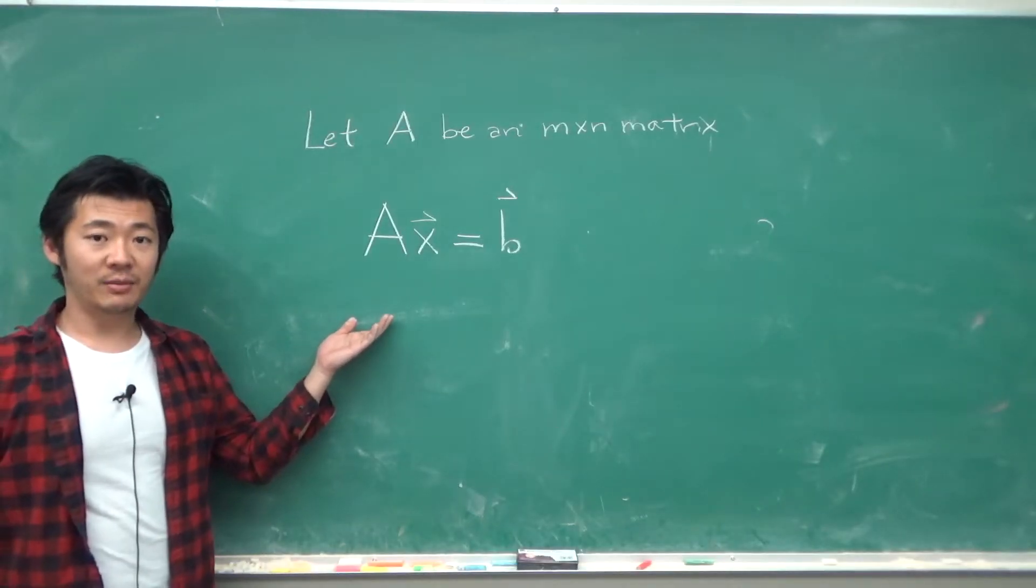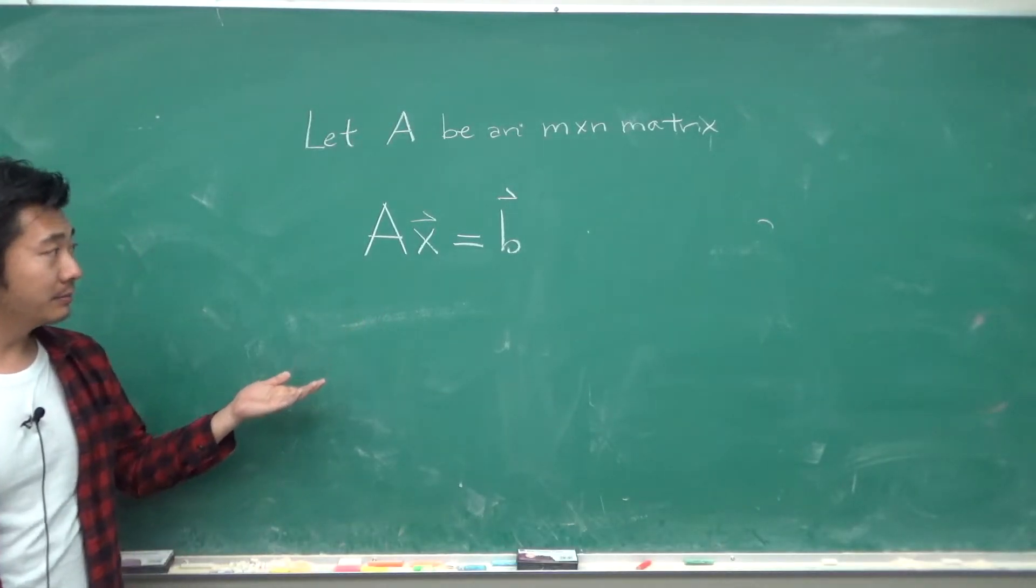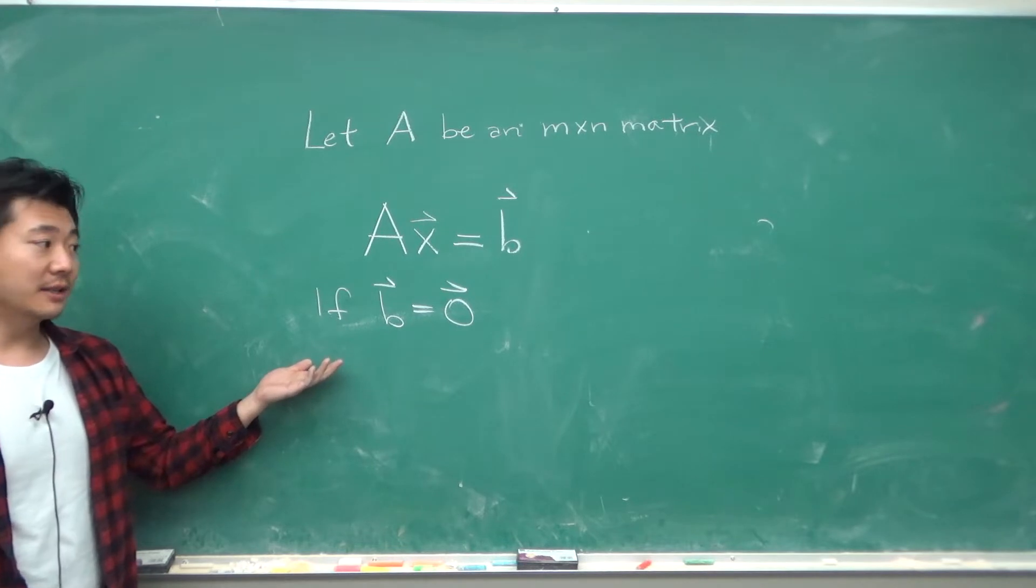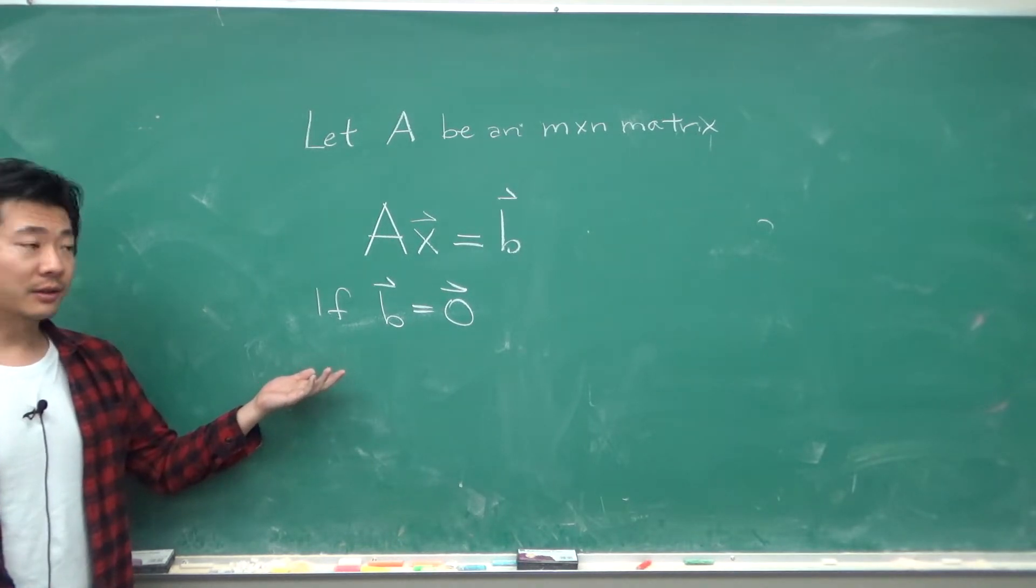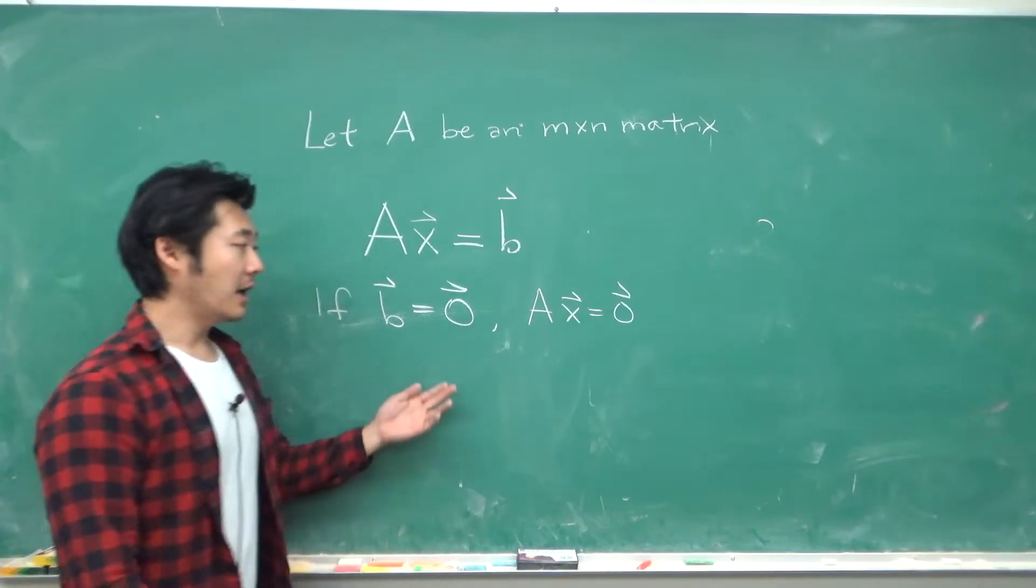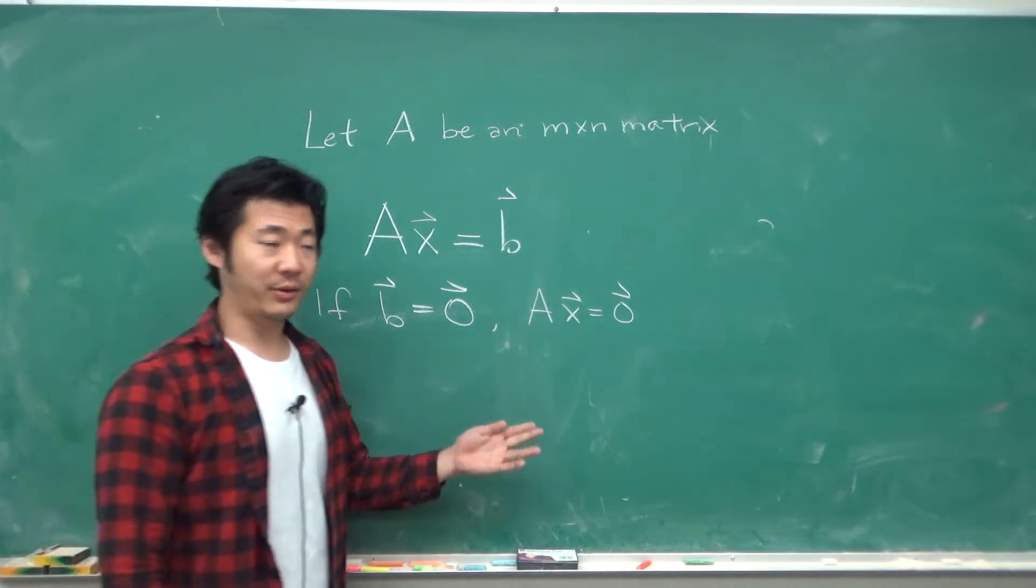Let A be an n by n matrix and B a vector. If the vector B is actually the 0 vector, then this equation, Ax equals the 0 vector, is called the homogeneous equation.